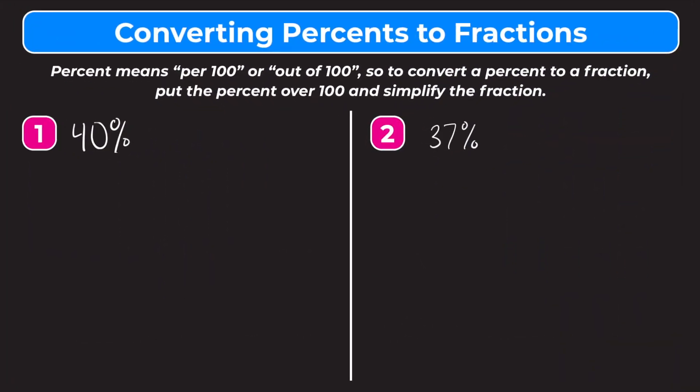Hey everyone, in today's video we're going to learn how to convert percents to fractions. The word percent literally means per 100 or out of 100. It comes from an old Latin word and was abbreviated and changed, but percent means per 100. So to convert percents to fractions, we're going to put the percent over 100 and then simplify the fraction.